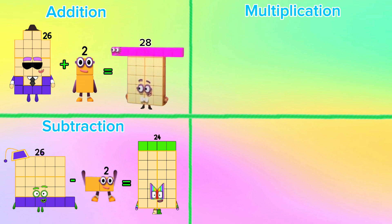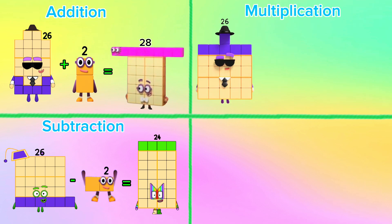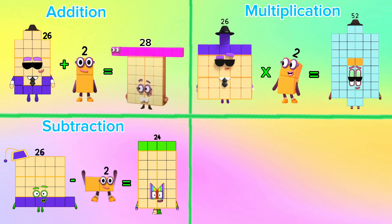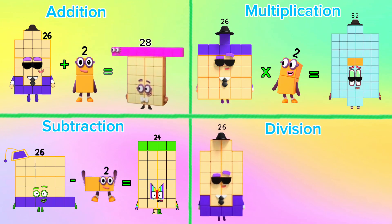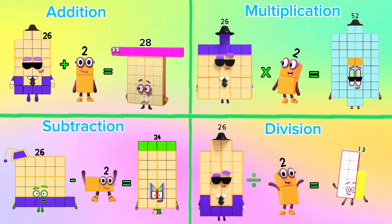Let's try multiplication. 26 multiplied by 2 is equals to 52. Next is division. 26 divided by 2 is equals to 13.